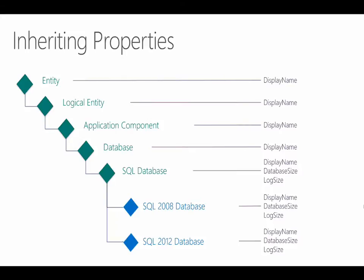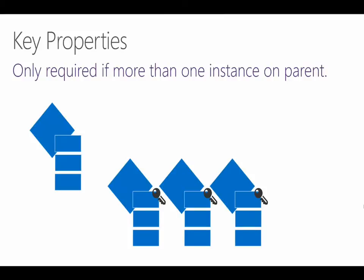Before we jump into a demo, let's cover key properties. When you define a property, you need to specify whether it's a key property or not. Most properties will not be a key. A key property uniquely identifies each instance of a class. Following our database example, the key property is database name — no two databases can have the same name on the same SQL instance. All other properties can have the same value and we don't specify them as a key. But two databases aren't allowed to have the same name, so we define that one as a key.